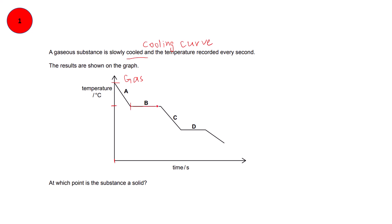Then there comes a stage when there is no more change in temperature — this happens when gas changes to liquid. Cooling further, the temperature of the liquid decreases, and again a stage comes when there is no more change in temperature. This is the freezing point, where liquid gets converted into solid. The question asks at which point the substance is a solid, so D is the right response.